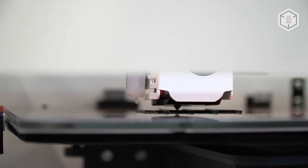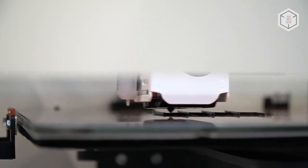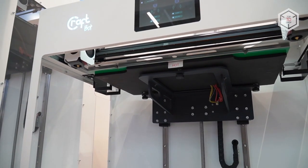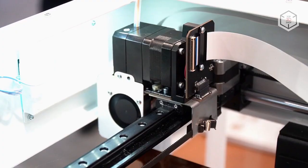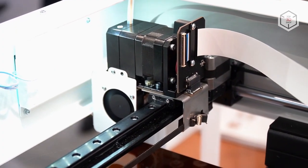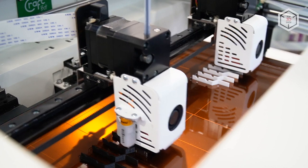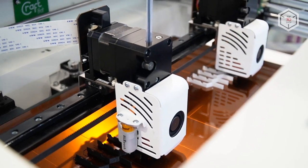Aside from the build volume, all CraftBot Flow 3D printers have identical specifications. The maximum extruder temperature of 300 degrees Celsius, bed heating of up to 110 degrees, and the printing speed of up to 200 millimeters per second.